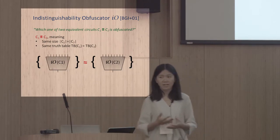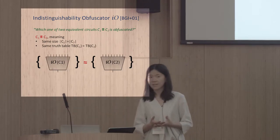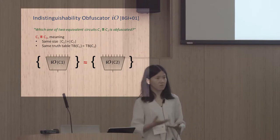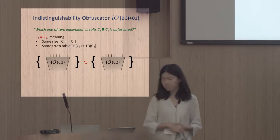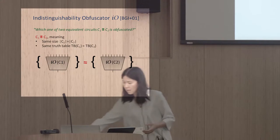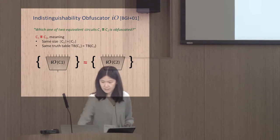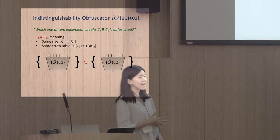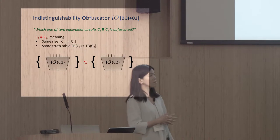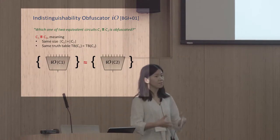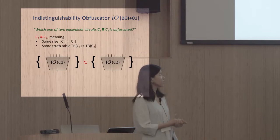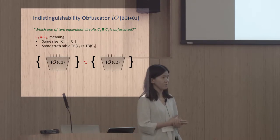In particular, they cannot be separated by just evaluating some input and obtaining the output. If they satisfy these two equivalence notions, then we would like the output of the obfuscator — which we call obfuscated circuits — to have distributions that are computationally indistinguishable.